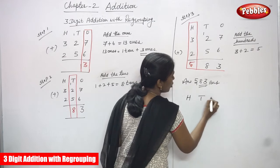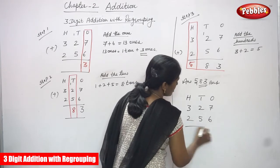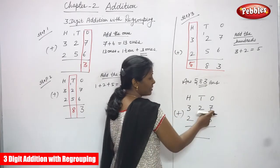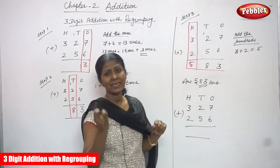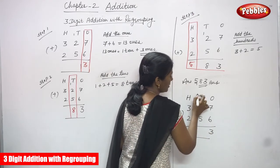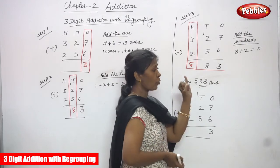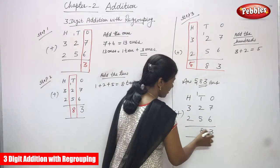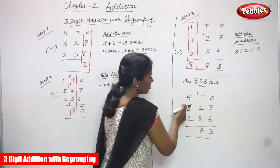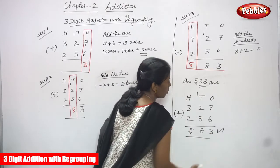This is a normal addition: 327 plus 256. First concentrate on the ones place — seven in the mind, six on the finger: eight, nine, ten, eleven, twelve, thirteen. Write three, carryover goes to the tens place. One plus two plus five: three in the mind, five on the finger — four, five, six, seven, eight. Write eight. No carryover, so for hundreds: three in the mind, two on the finger — four and five. The answer is 583.